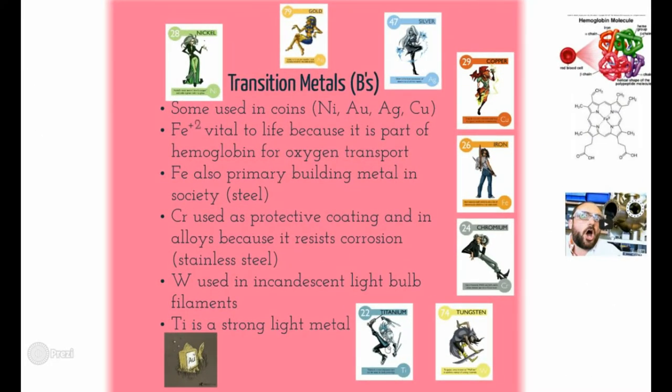Transition metals — these are all your B groups. There are tons to talk about. Mainly they make up the whole traits that define what we think of as a metal. So when you think of metals on the periodic table, these are the guys that pop in your brain first: iron, gold, silver, copper — things of those sorts.